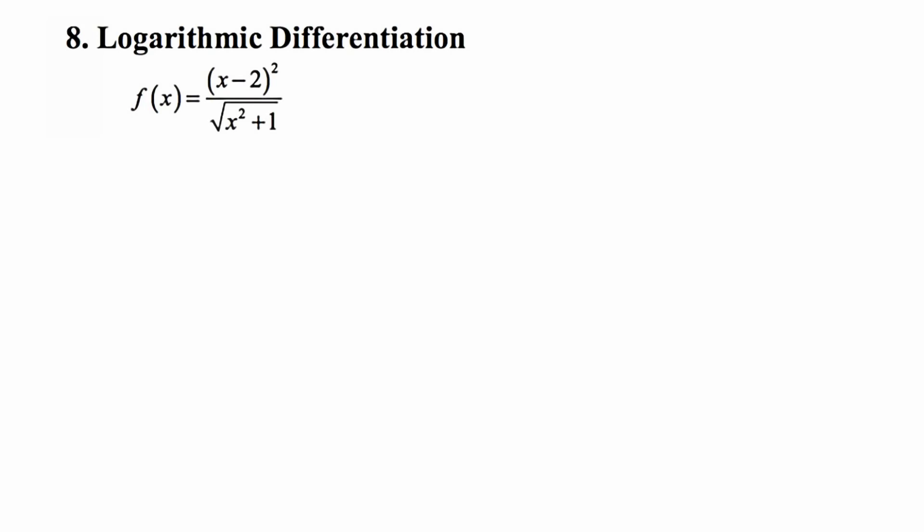So we're going to do this process called logarithmic differentiation in which we take the natural log of both sides to start. Now in earlier courses, you learned that if you had an equation that was balanced, as long as you did the same thing to both sides, your equation would still be balanced. You might cube both sides of an equation, you might take the square root of both sides of an equation. And in pre-calculus, you learned that you could take the natural log of both sides of an equation, and it'll still be a balanced equation.